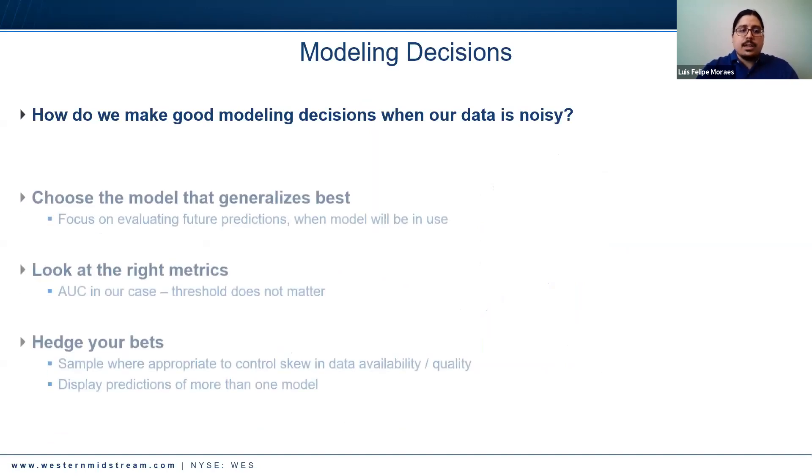So how do we make good modeling decisions when our data is noisy? The path we took was to choose the model that generalizes best. That's common sense really, but it gave us better appreciation for this piece of common sense. Focus on evaluating future predictions when the model will actually be in use - however your model performs in historical data doesn't really help the bottom line. Look at the right metrics. In our case the threshold didn't really matter - we cared about how the model looked, essentially the shape of that output. So the area under the curve was what we were looking at for determining which model was best.